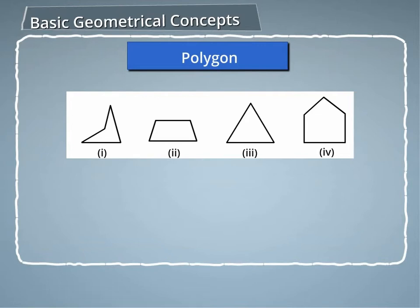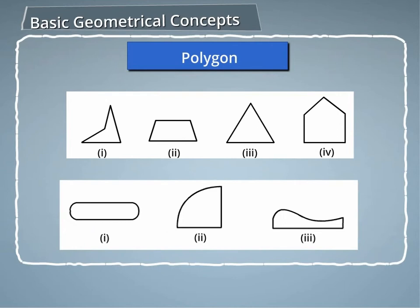In the first row, all the figures are polygons, and in the second row, none of the figures is a polygon.